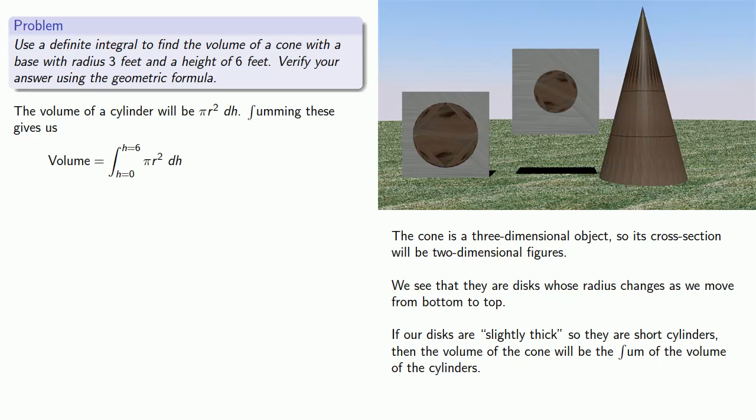For the cross-sections here at the bottom, the radius is large. But for cross-sections here at the top, the radius is smaller. So r is a variable, and we can't leave it in the integrand. We have to express it in terms of h.